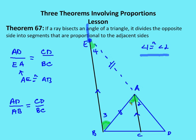We know BE is parallel to AC. If BE is parallel to AC, then angle 1 is congruent to angle 3 because they are alternate interior angles, and angle 2 is congruent to angle 4 because they are corresponding angles. Since 1 and 2 are congruent, 1 and 3 are congruent, and 2 and 4 are congruent, we can say angle 3 and angle 4 are congruent. Therefore EA is congruent to AB.